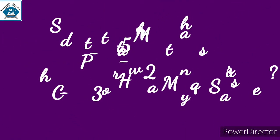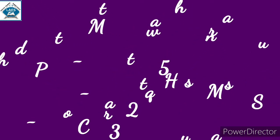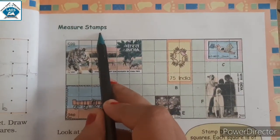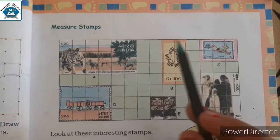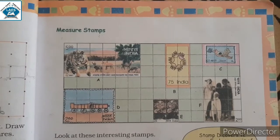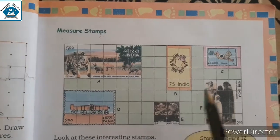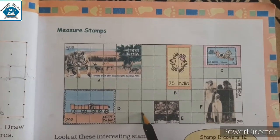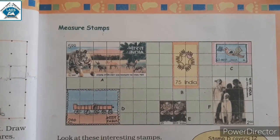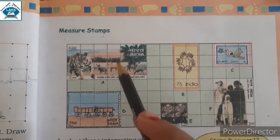Good morning students. Here we will continue with chapter number 3, that is 'How Many Squares.' Today's topic is major stamps. So here you can see 6 Indian stamp tickets. In your previous class 4, you have studied about stamp tickets and found the value of stamp tickets. Now you will tell me what is the value of all stamp tickets — let's check your previous knowledge.